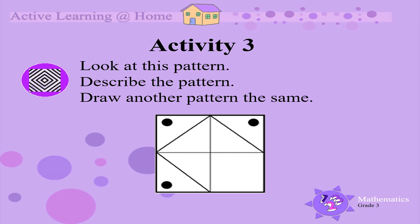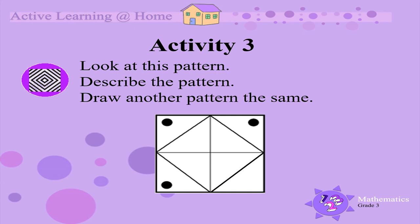Activity 3. Look at this pattern. Let's describe this pattern. The whole pattern is in a square. This square is divided into 4 smaller squares. In each small square, there is a line going from one corner to the corner on the other side, and there is a dot in the outside corners. Let's complete this pattern. We need to draw a line from one corner to the opposite corner, and draw a dot on the outside corner.